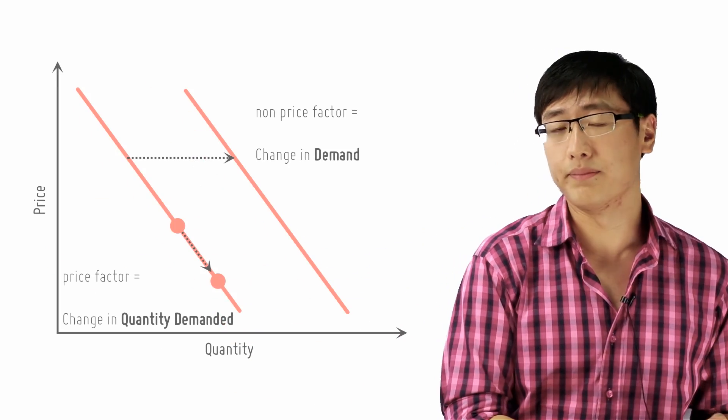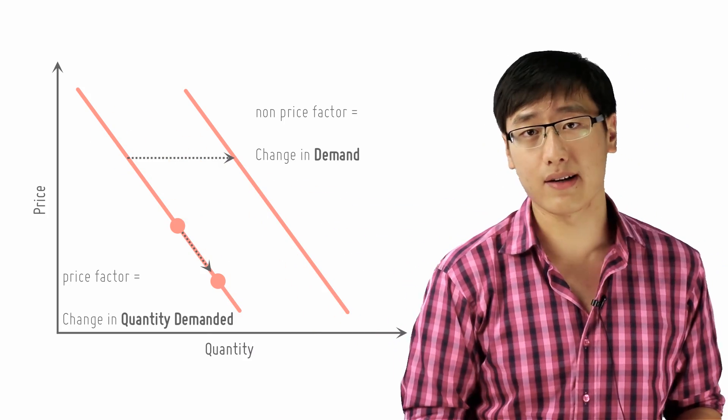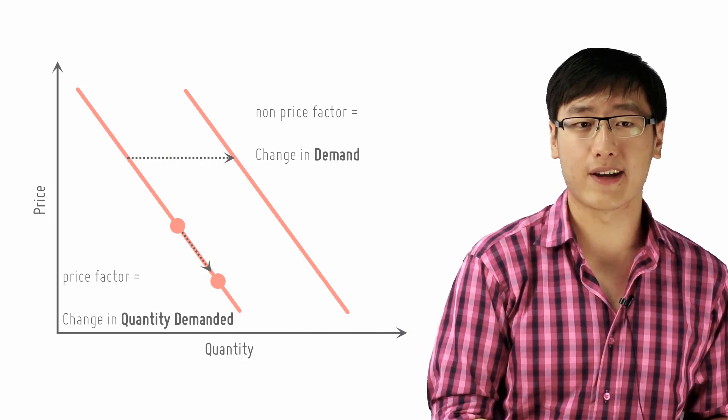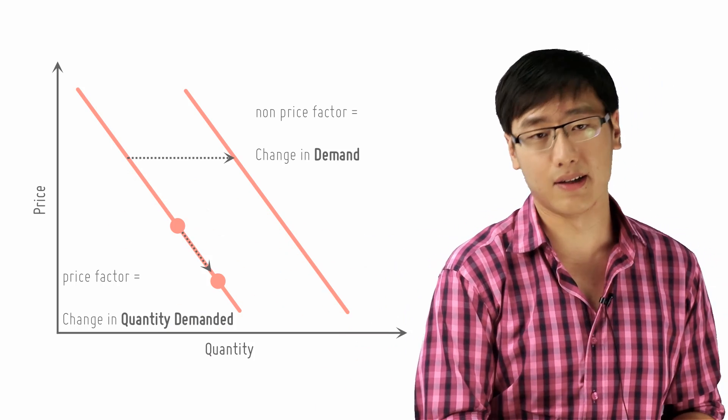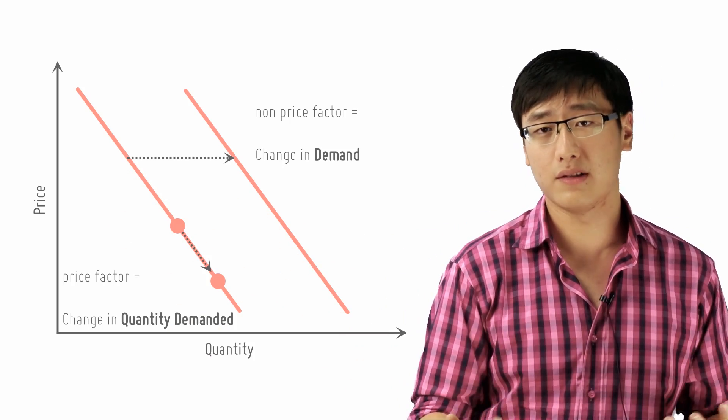if it's a price factor, then it will be a shift along the curve. You still keep the same demand curve. If it's a non-price factor, you move the entire demand curve and that is the difference between demand and quantity demanded.